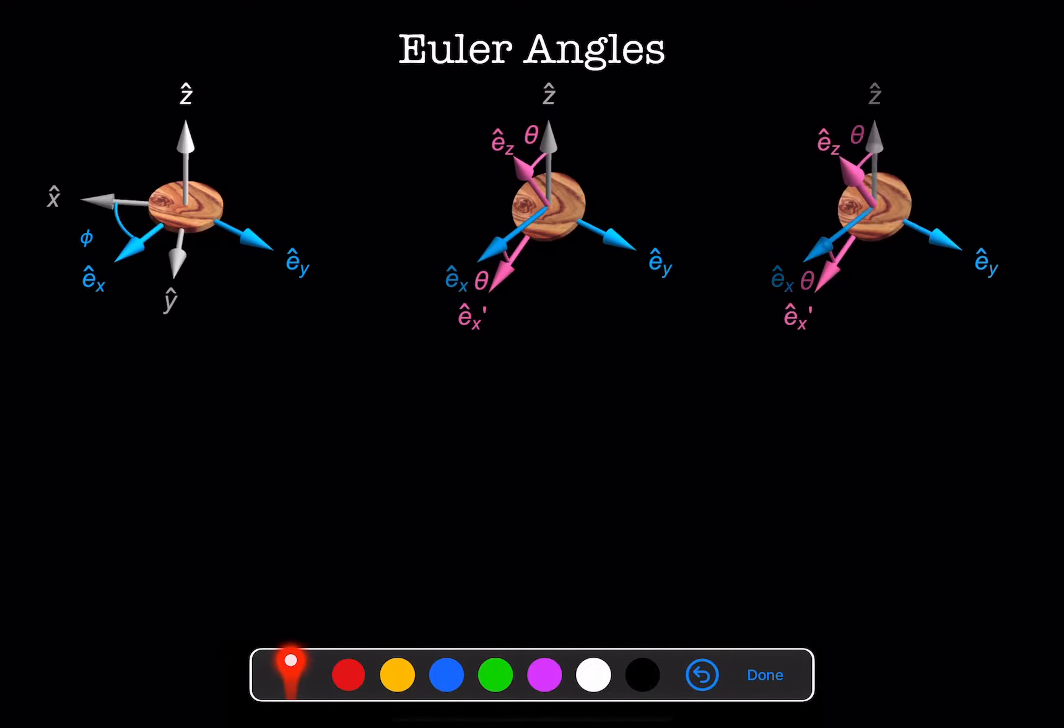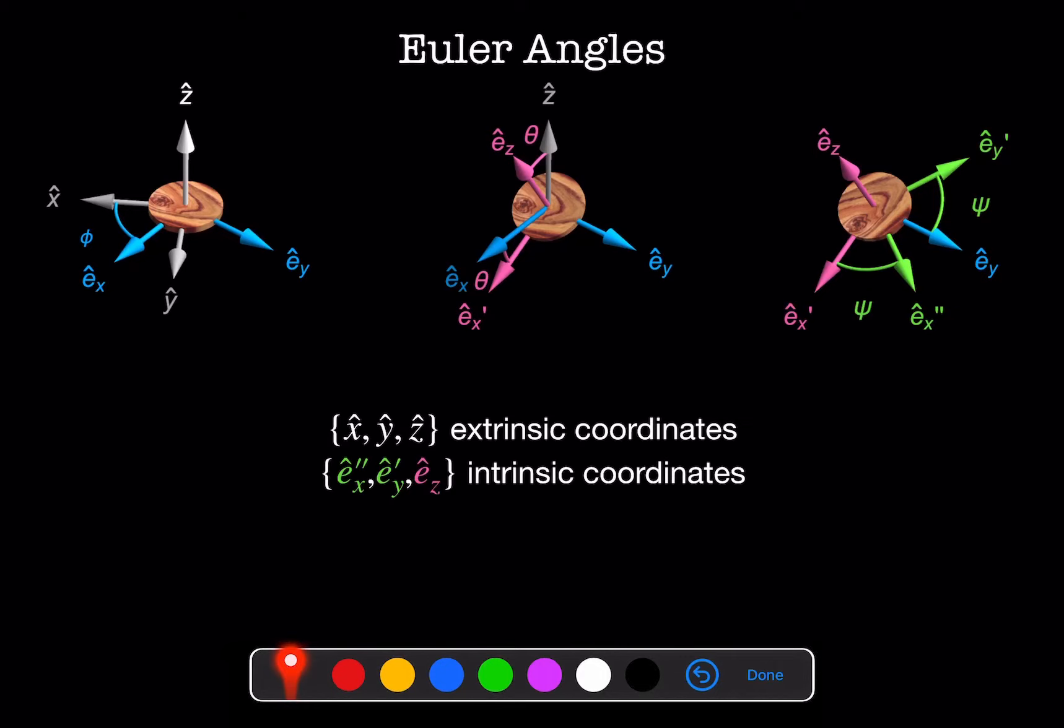Lastly, we'll rotate about the new E_z axis by angle psi. This gives us new coordinates, E_x double prime and E_y prime in the body frame.